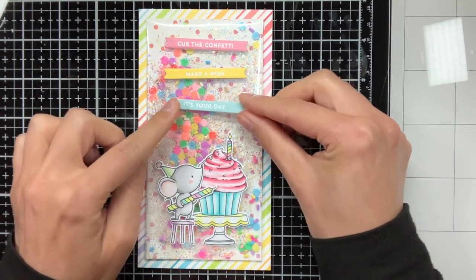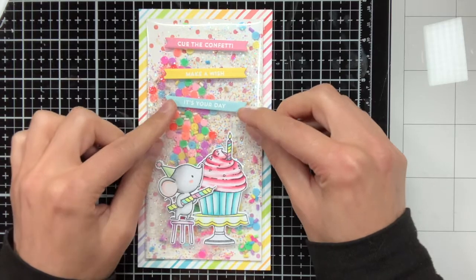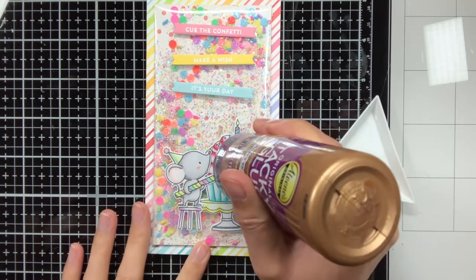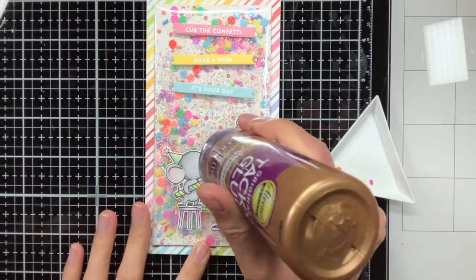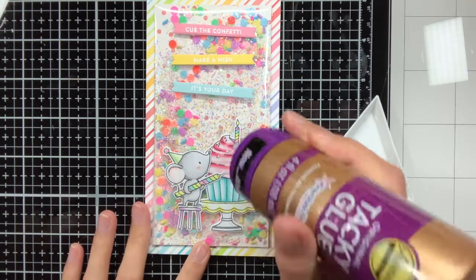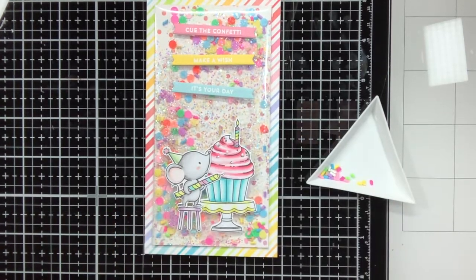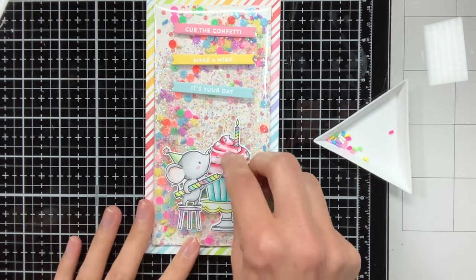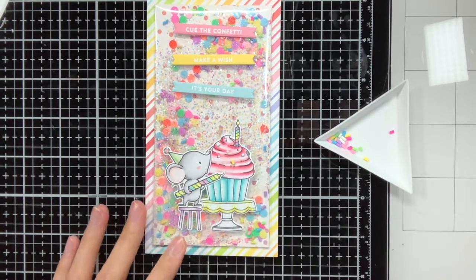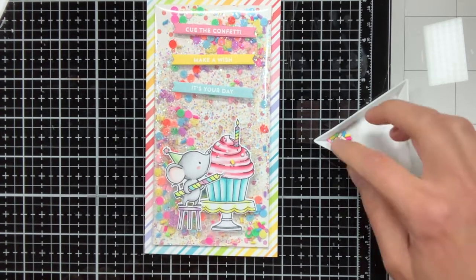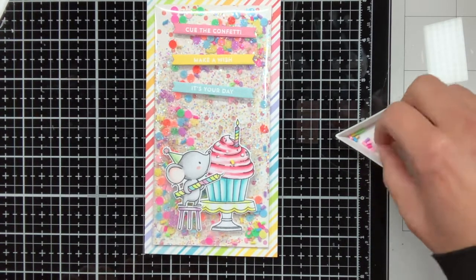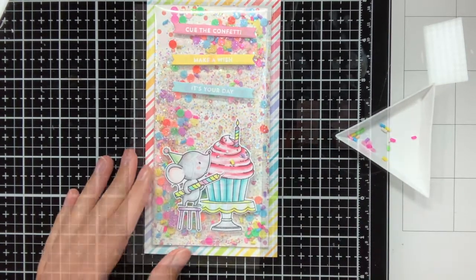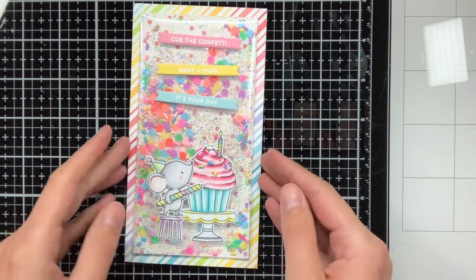While coloring you may have noticed that I did not do anything with the sprinkle parts of the cupcake, and that is because I thought I wanted to add some real sprinkles, so this is the sequins that I also put in the shaker and I will now also put it on the cupcake. So I put down some tiny dots of liquid glue and now I am choosing some colors out of the sprinkles and then putting them on the cupcake. And I really feel this is the perfect finishing touch.